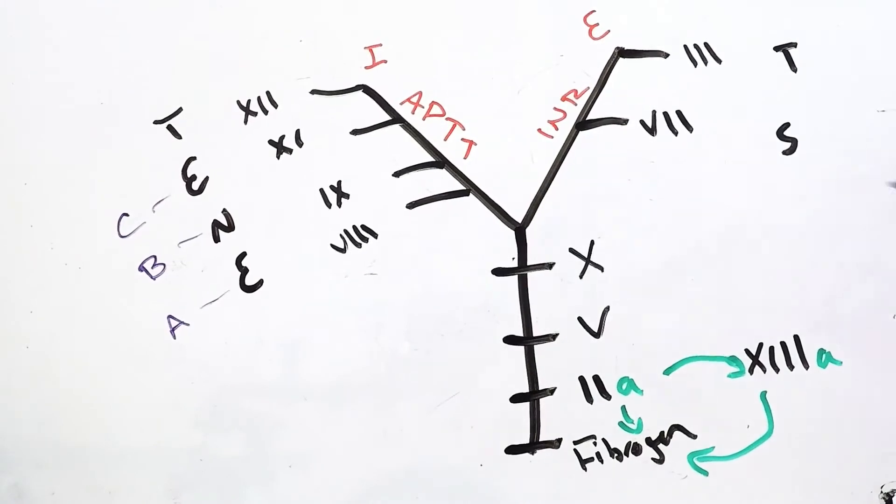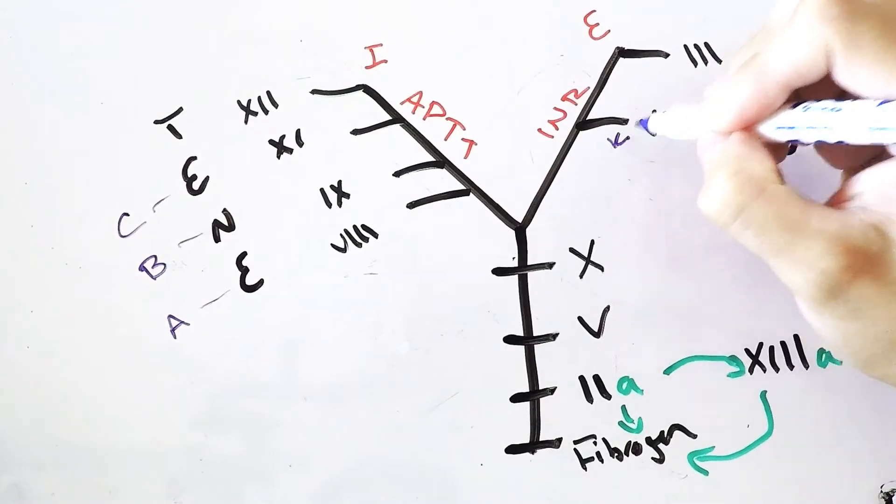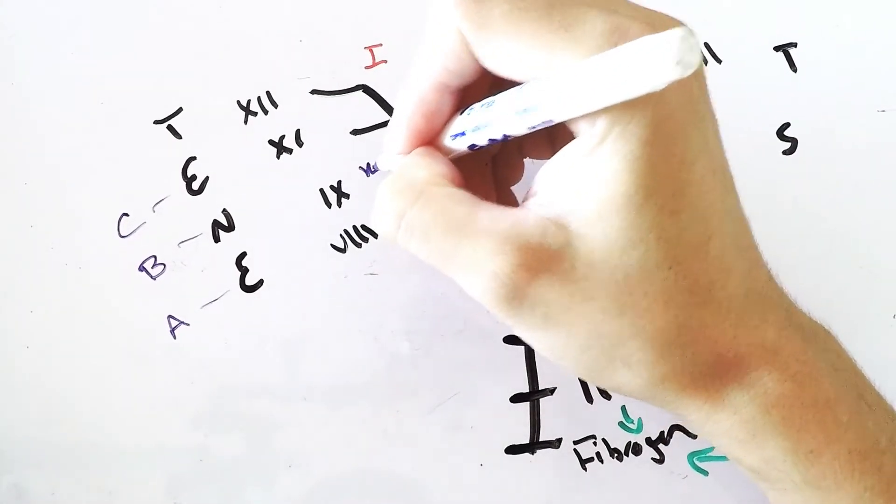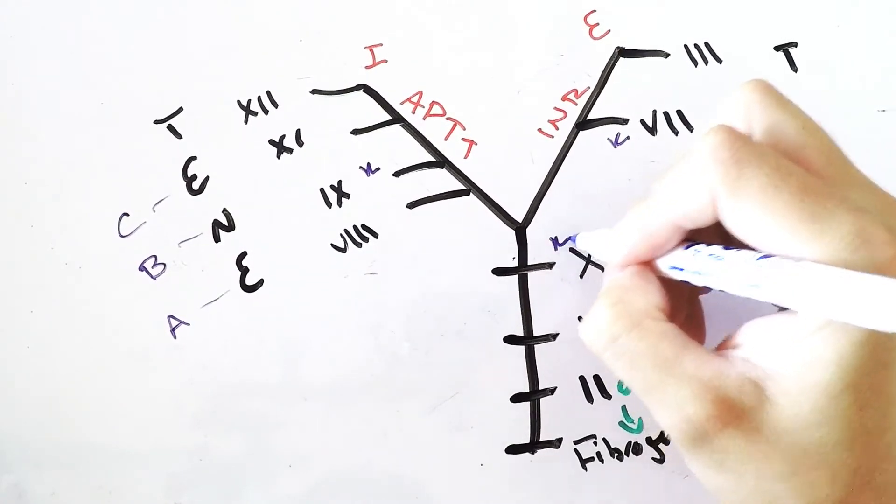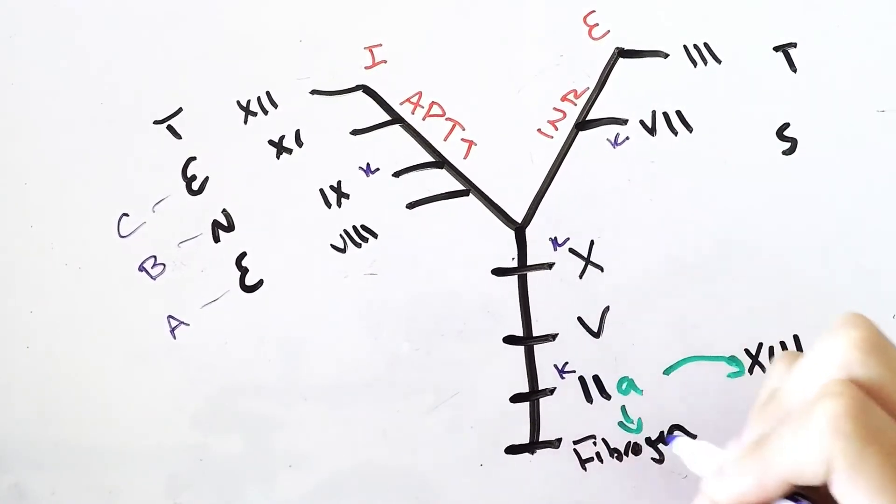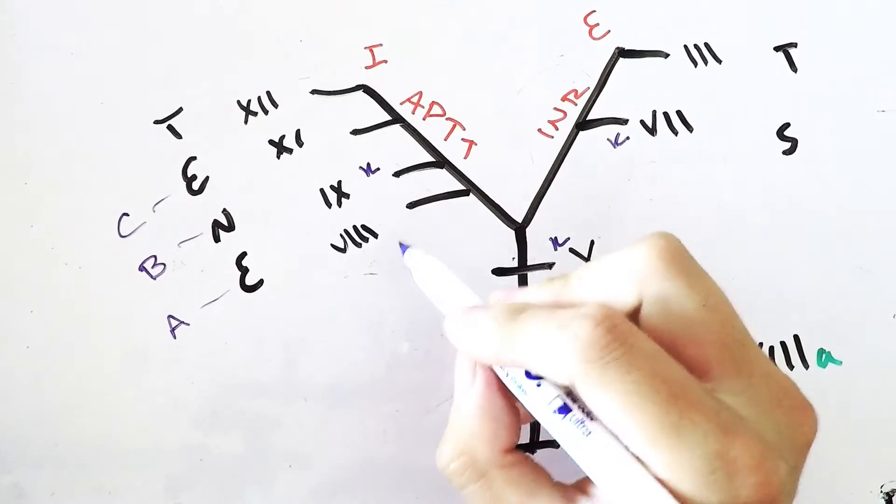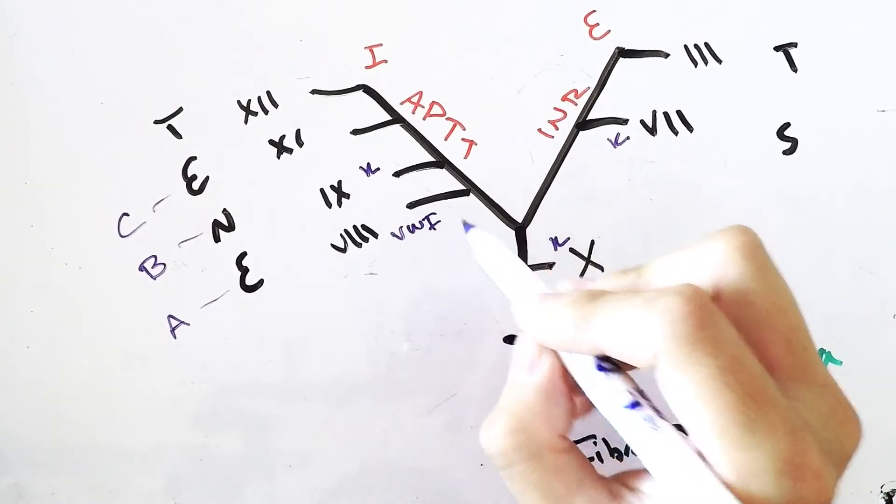You can also add deficiencies like your vitamin K. I just put down the K's over here to let me know which ones are sensitive to vitamin K. Also your von Willebrand factor for eight.